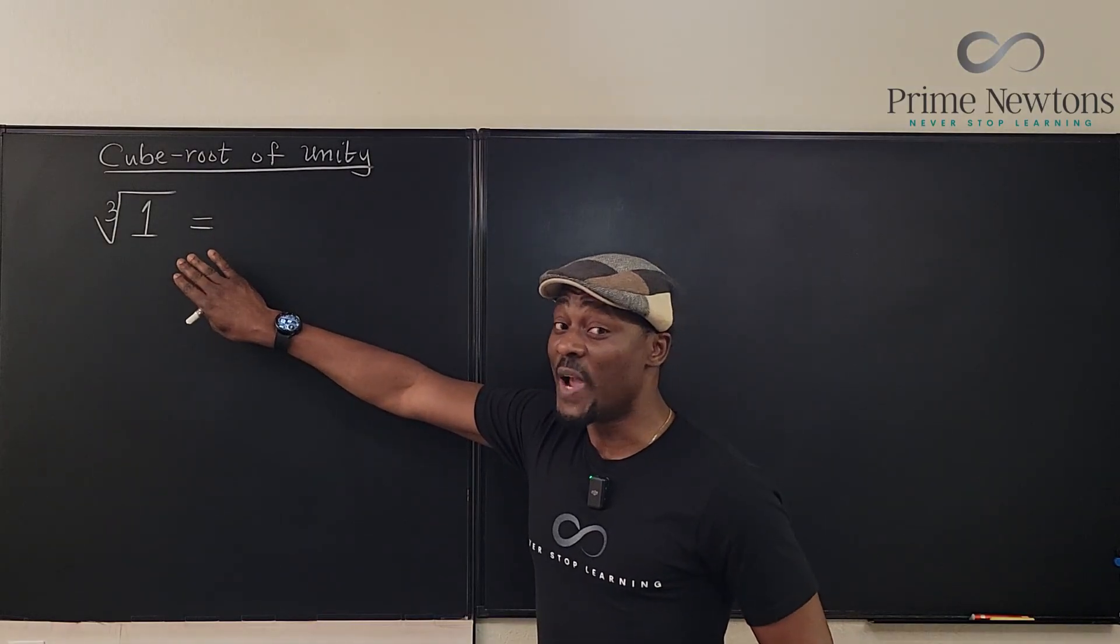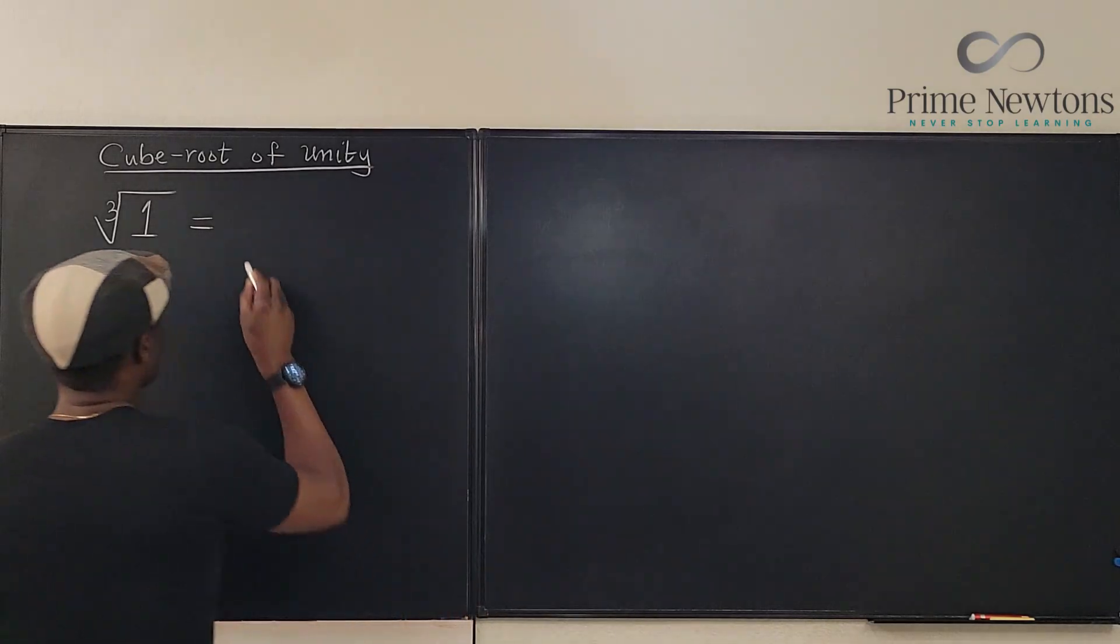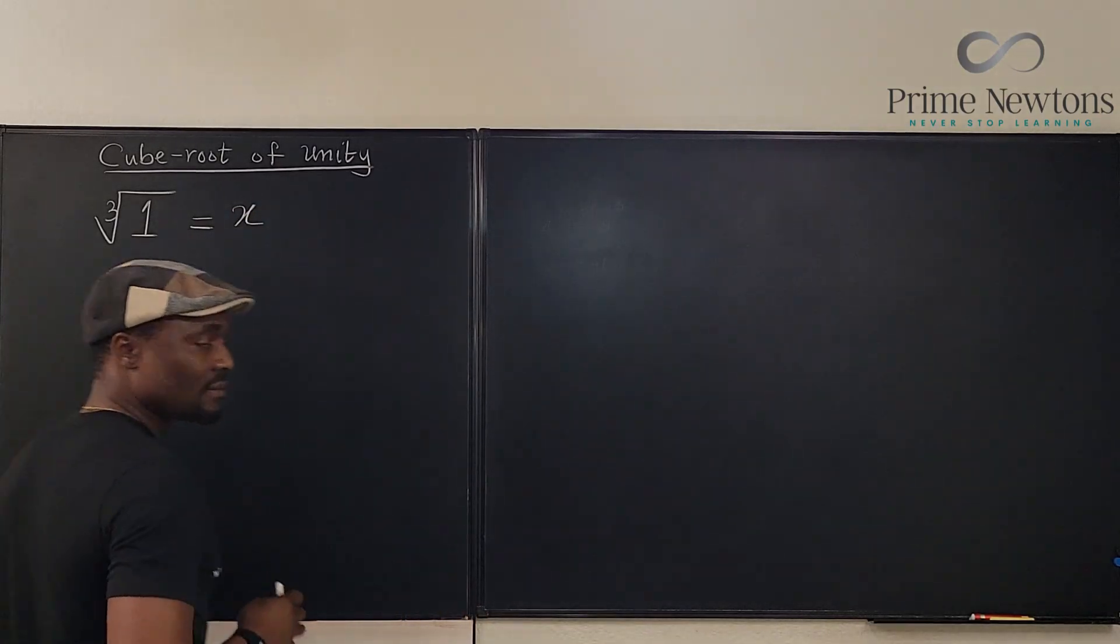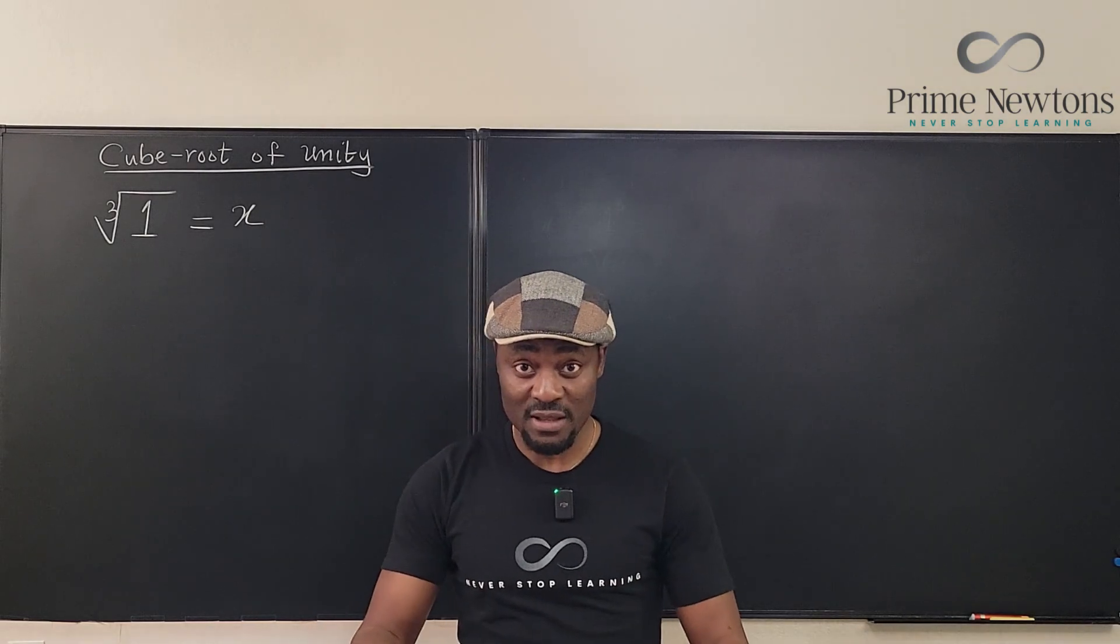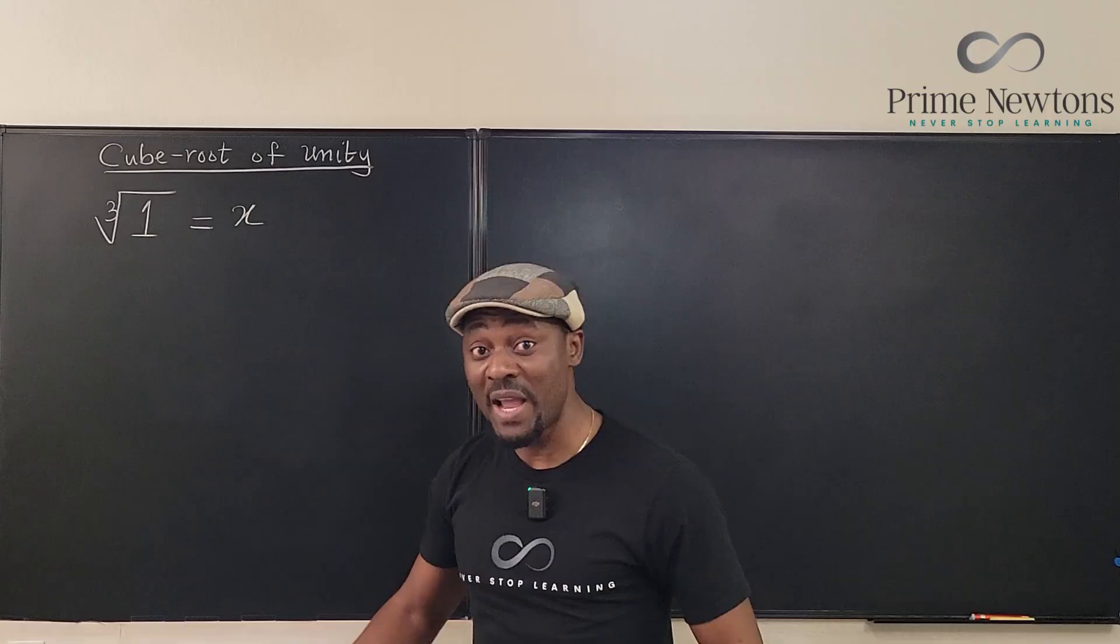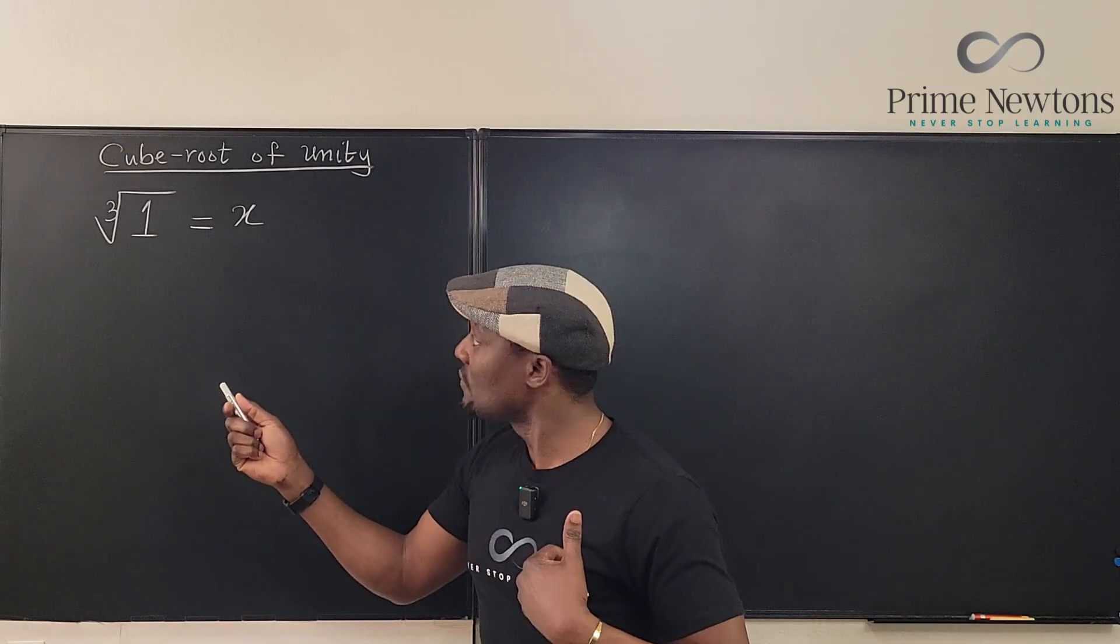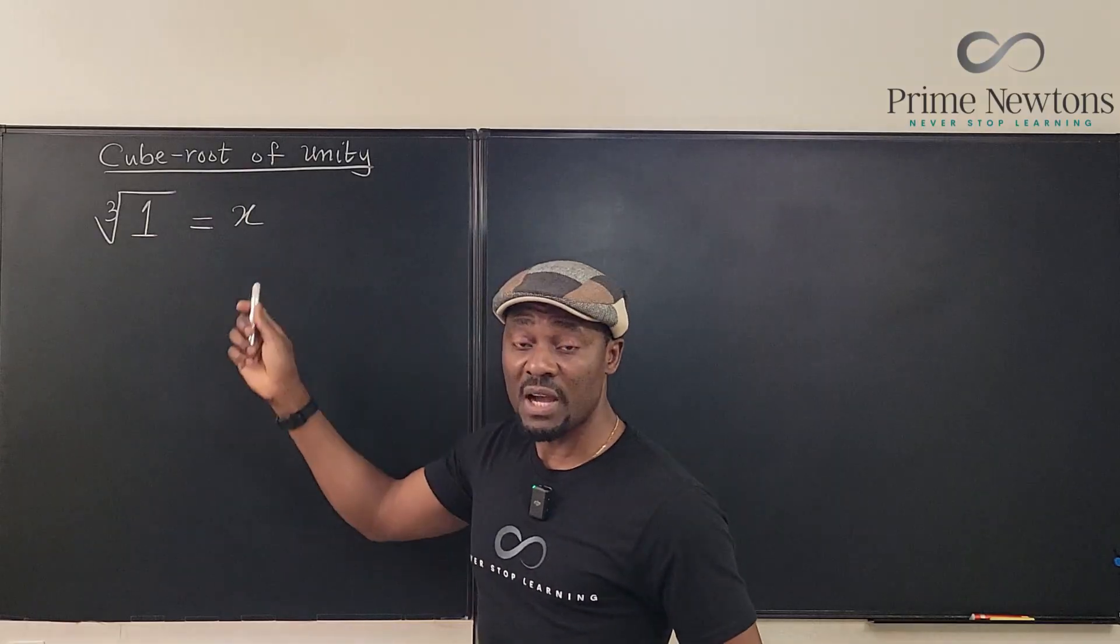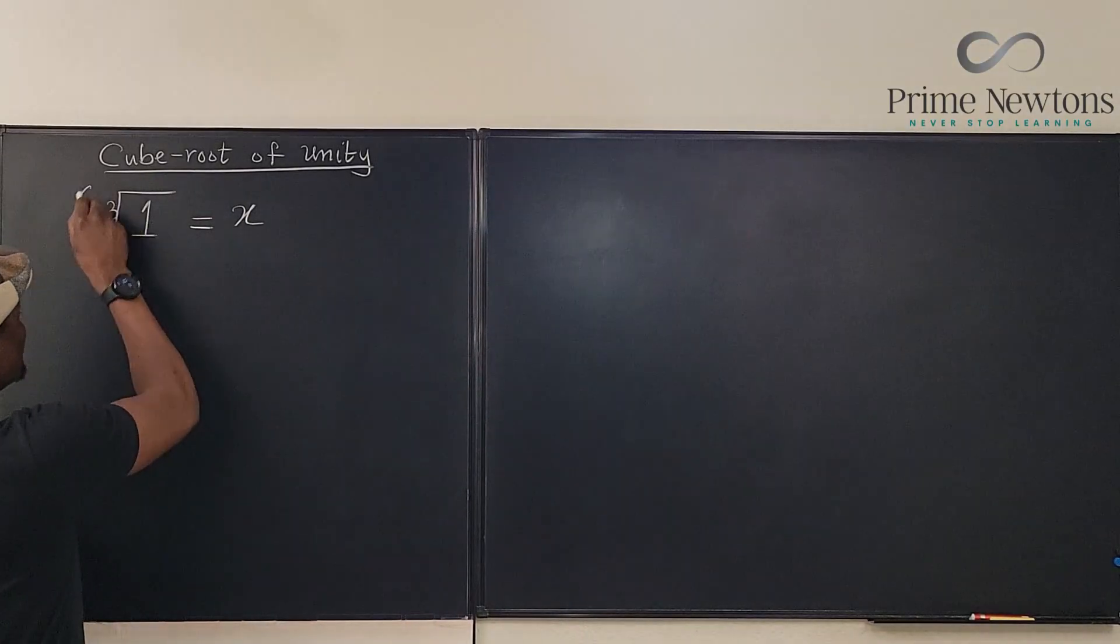Let's assume we don't know anything about the cube root of 1. Let's just say it is x. I know x is 1. That's what you would say. But I want to try to solve this equation as if I don't know anything. And if I was given an equation like this, I know what to do. I would take the cube of both sides, raise both sides to power 3. So I'm gonna do this.